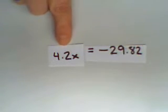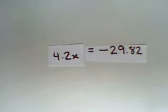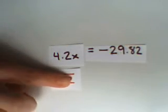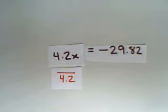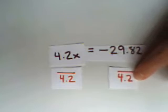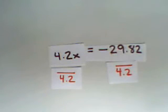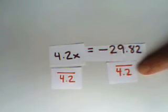Now my goal is to get rid of this 4.2 here that's hanging on with the x. If I divide this left side of the equation by 4.2, I'll be left with just x. But again, what I do to the left, I have to do to the right of the equation. So I'll divide the other side by 4.2.